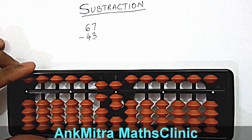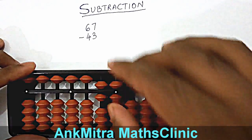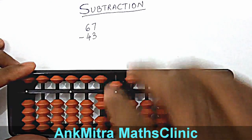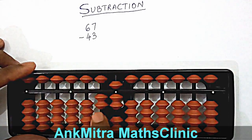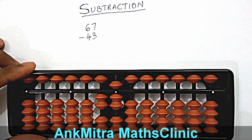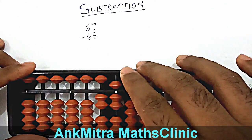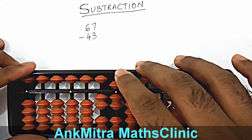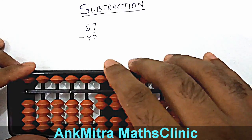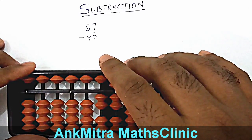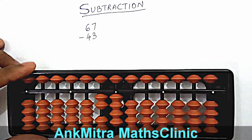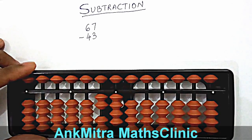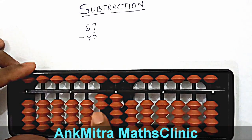Small friend of 4 is 1. So we'll add 1 and subtract 5 to subtract 40 from the tens place. And for units place, subtraction of 3 — we'll add the small friend of 3. Small friend of 3 is 2. So we'll add 2 and subtract 5, which will complete the subtraction of 43 from 67. The answer we have got is 24.